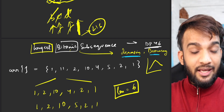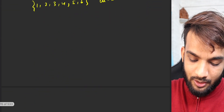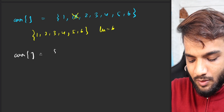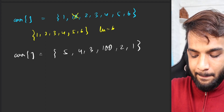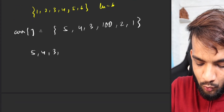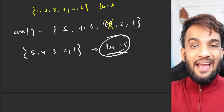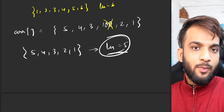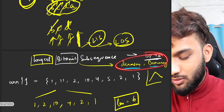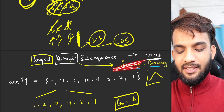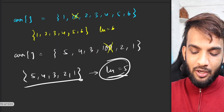Similarly, the longest decreasing subsequence is also a bitonic. For example, if I take the array 5, 4, 3, 300, 2, 1, then 5, 4, 3, 2, 1 — length 5, omitting 300 — is a longest decreasing subsequence, and it is still bitonic. So as long as it has either an increasing portion, a decreasing portion, or both, that's perfectly valid.